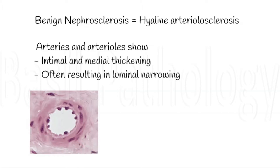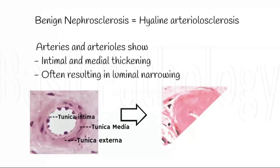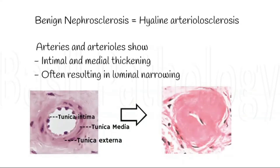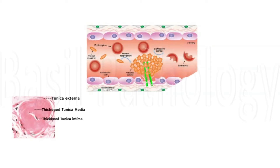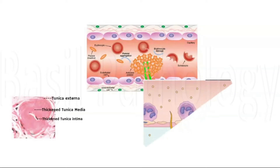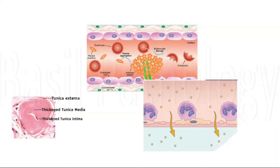You can see the small arteries here with normal tunica intima, media, and externa. In nephrosclerosis, you can very well appreciate the wall thickening and luminal narrowing. The pathogenesis includes endothelial injury due to high blood pressure, followed by platelet activation. The increase in vascular permeability leads to plasma protein leakage and hyaline degeneration.